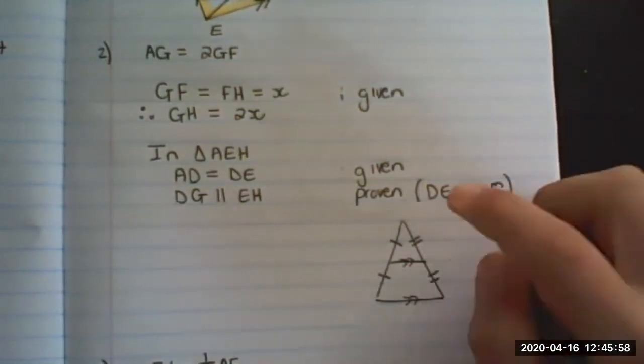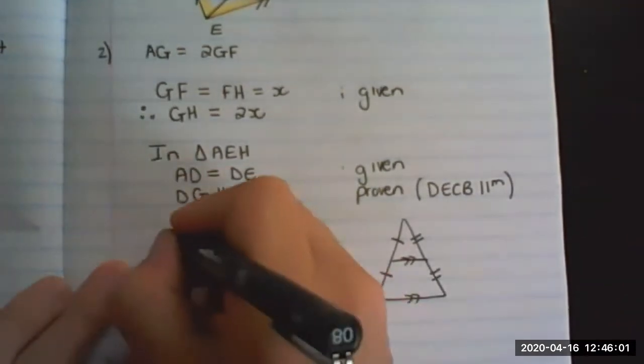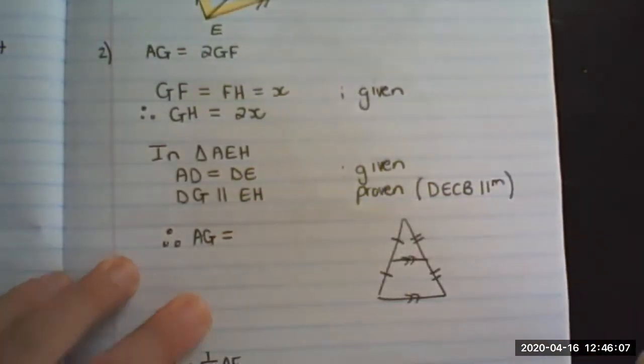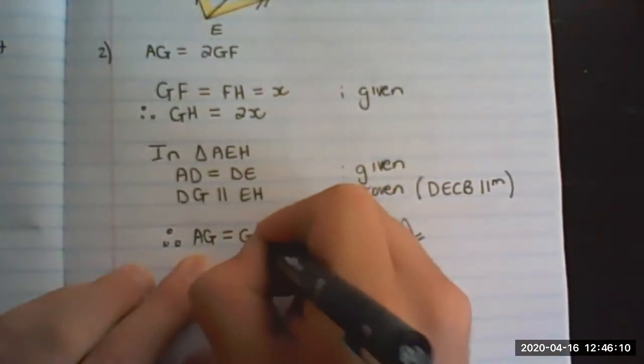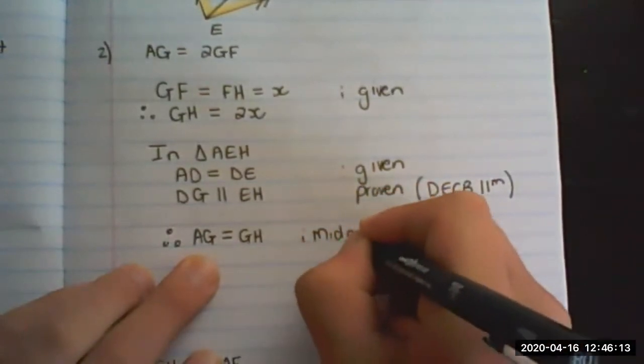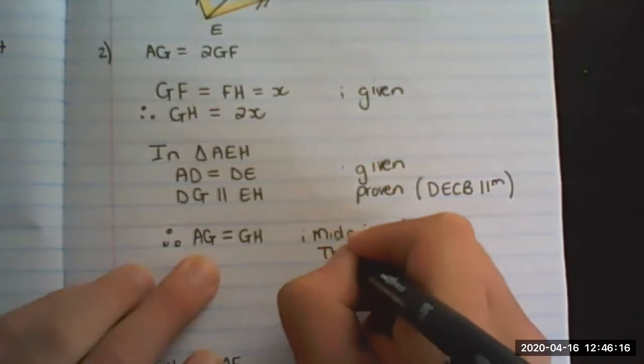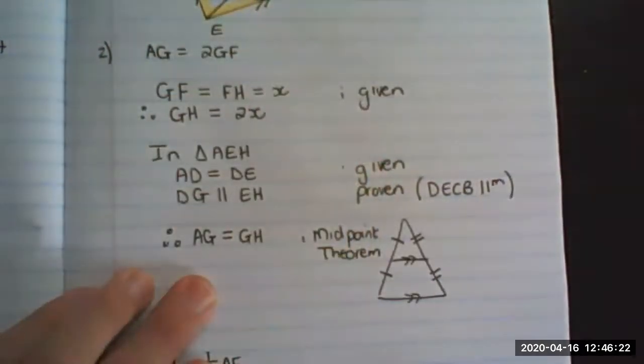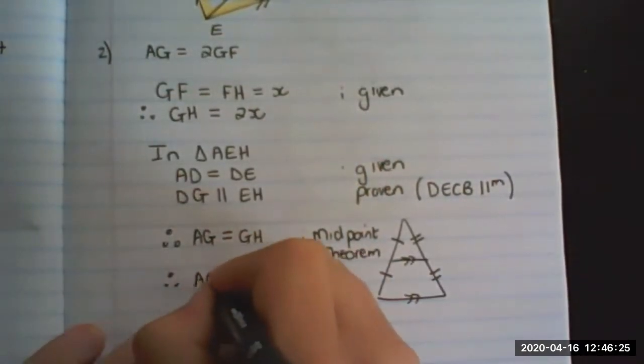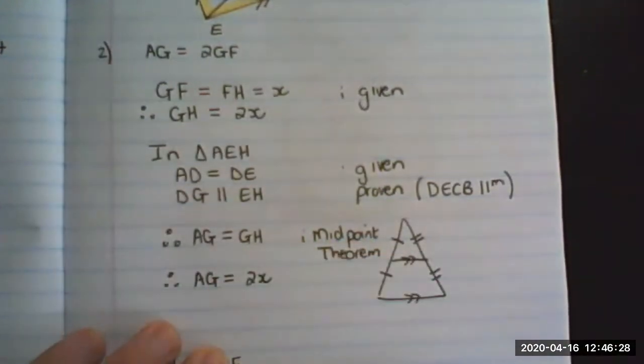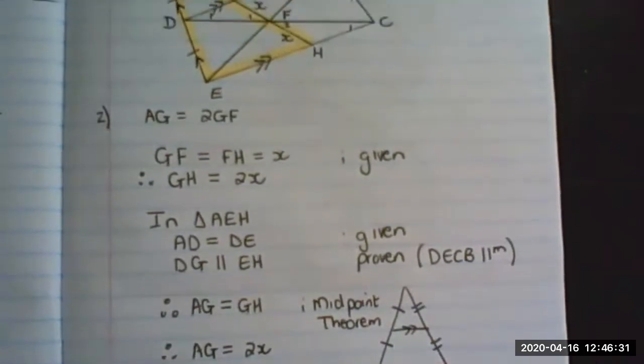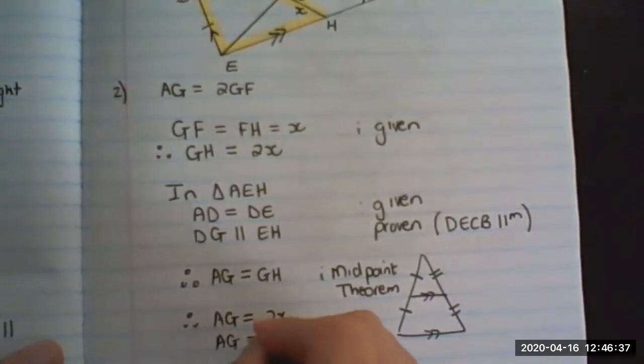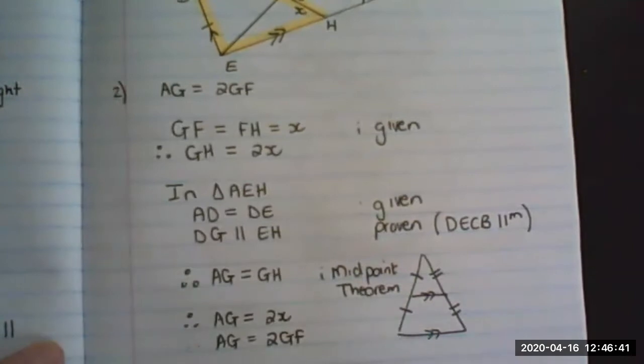then that side is equal to each other. So we say therefore AG is equal to GH by the midpoint theorem. But AG is equal to GH, and GH equals 2x, so AG equals 2GF and we have proven what was asked.